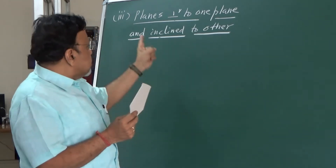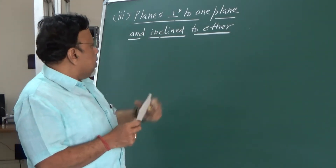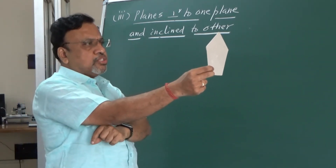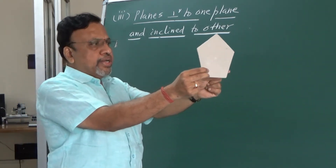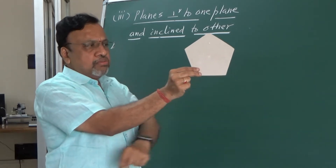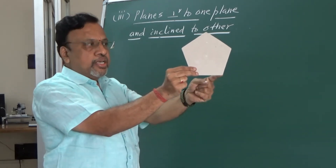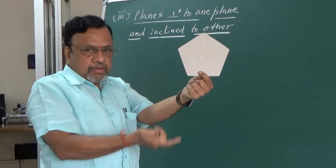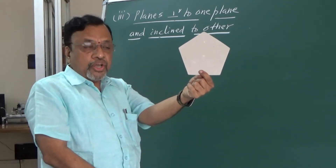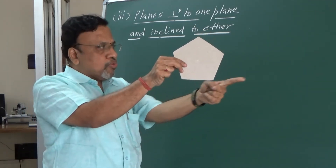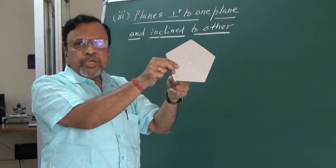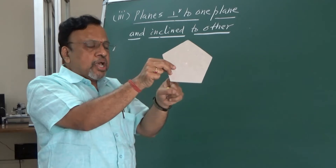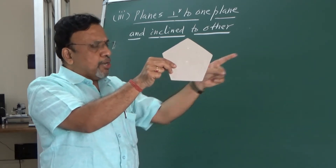Now, if I say a plane is perpendicular to one plane and inclined to the other — for example, if I hold it this way and then incline like this — this particular plane is still perpendicular to HP but inclined to VP. In this particular case, the plane is inclined to VP, and the inclination with reference to VP is given by phi — that is, this plane is inclined to VP by an angle phi.